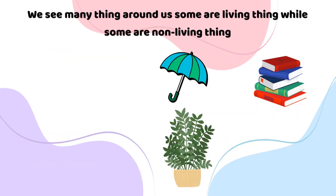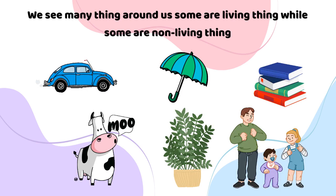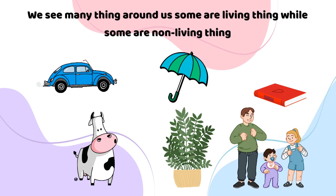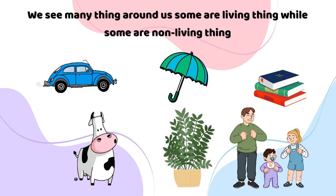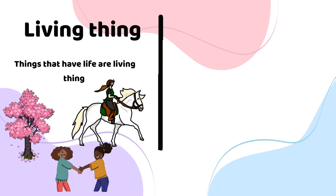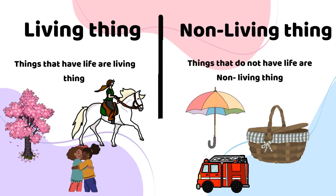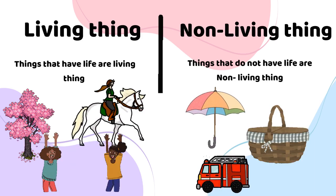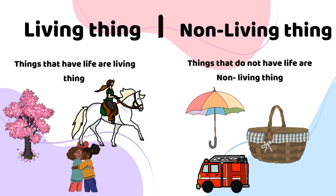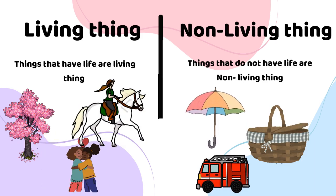Many things around us — some are living things, while some are non-living things. Things that have life are living things, like human beings, animals and plants. Things that do not have life are non-living things, like umbrella, basket, fire engines and many more.